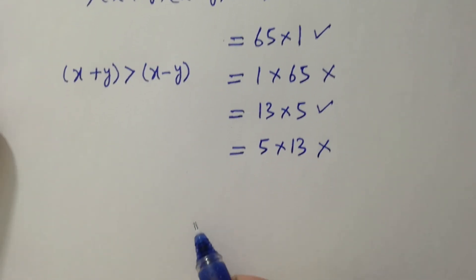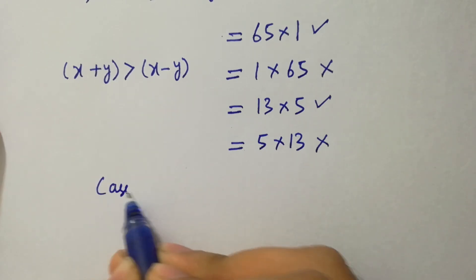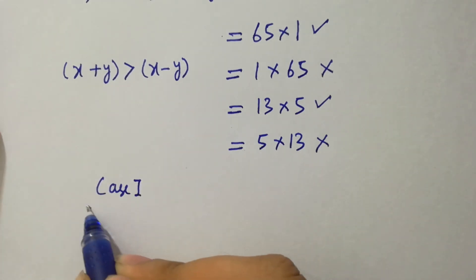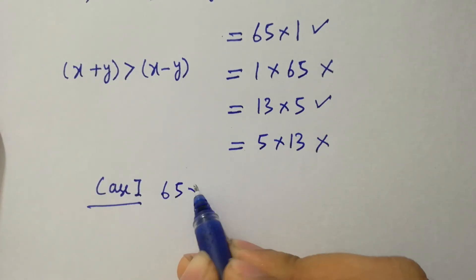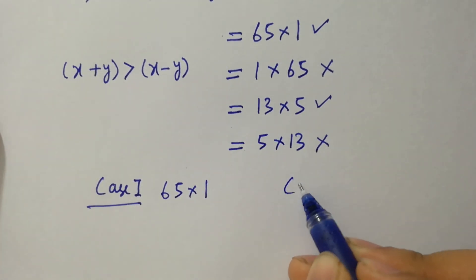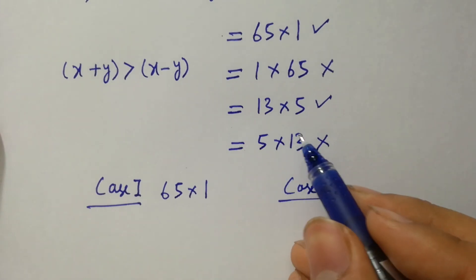So possible cases are here. First case is 65 times 1, and second case is 13 times 5.